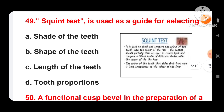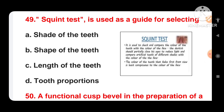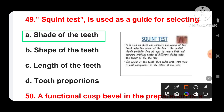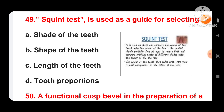Next question: the squint test is used as a guide for selecting — options are shade of teeth, shape of the teeth, length of the teeth, or tooth proportions. The squint test is used to check and compare the color of the teeth with the color of the face. Therefore, the squint test is used as a guide for selecting the shade of the teeth.